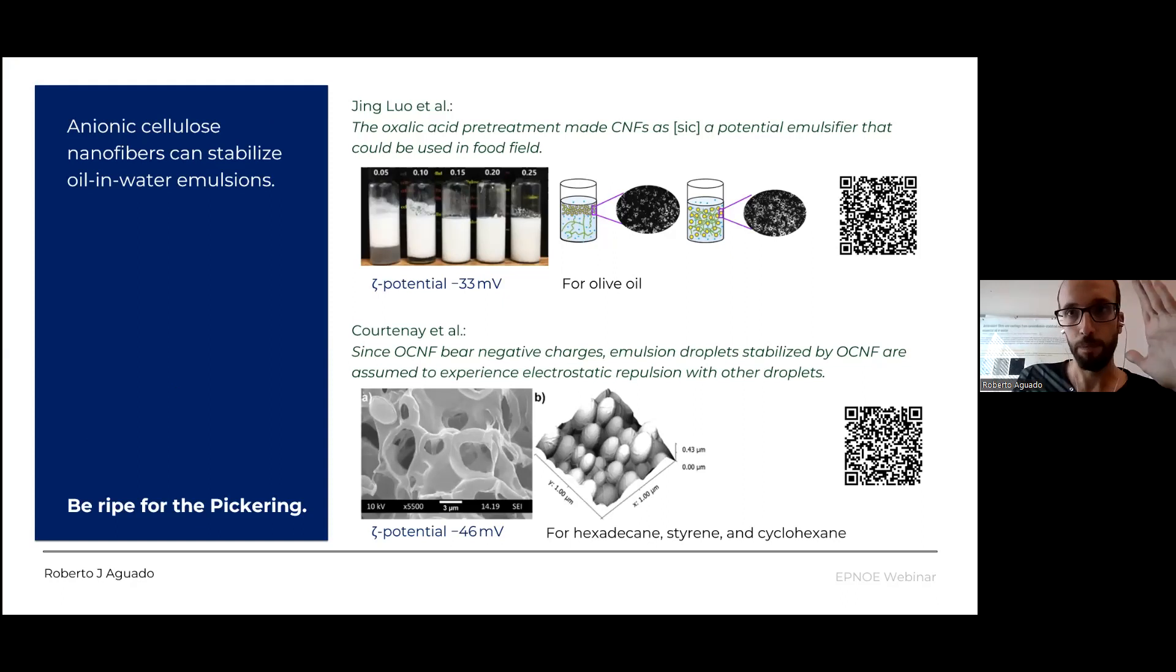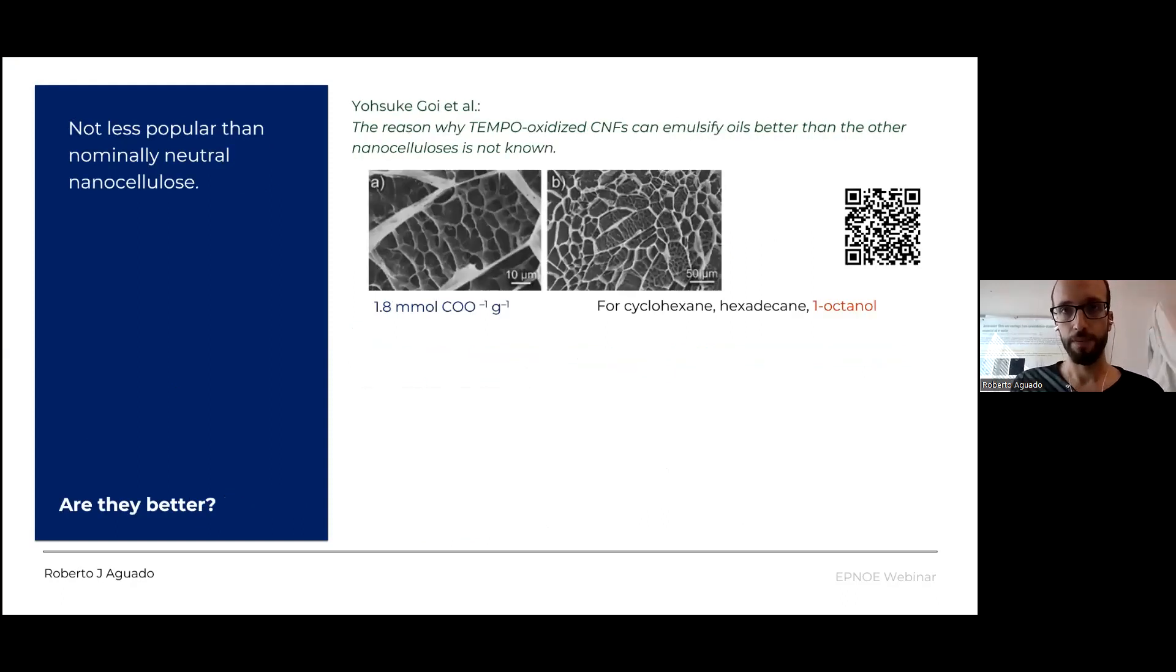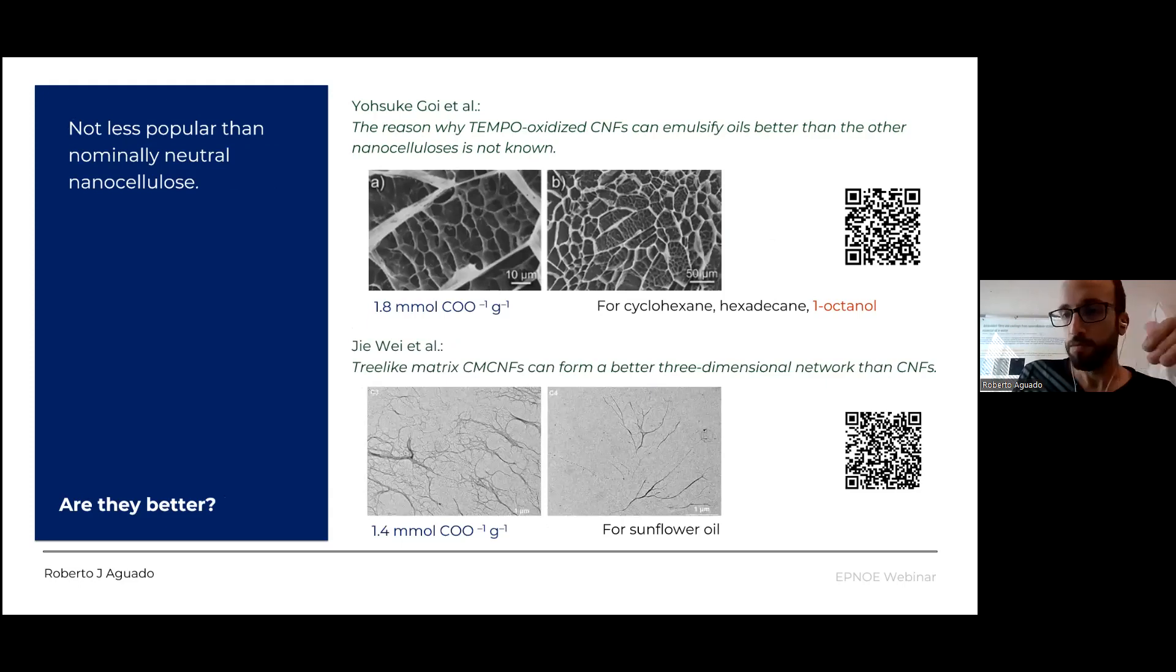Generally speaking, the point is taking advantage of the effective electrostatic repulsion between fibrils. That is not that simple. To many researchers, in fact, the oxidized TEMPO oxidized cellulose nanofibers seem a better choice than, let's say, nominally neutral nanocellulose. And I'm saying nominally neutral because they will always have significant zeta potential in water.